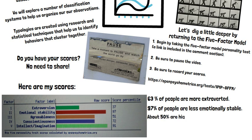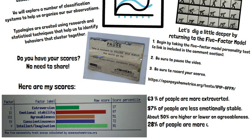In agreeableness — how we present ourselves in a situation — I'm scoring 51st percentile, because I can be friendly but I also know I can be challenging; I think that's the educator in me. In terms of conscientiousness, 28% of people are more organized than myself. And in terms of intellect and imagination, only 9% of people score higher on that dimension than I do. That makes sense to me as a person with a doctorate and as a sociologist — it makes sense that would be a high score.